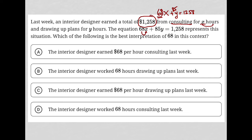Looking at the answer choices: Choice A — the interior designer earned $68 per hour consulting last week. I like that answer. Choice B — the interior designer worked 68 hours. Definitely not. Choice C — the interior designer earned $68 per hour drawing up plans. No, plans are associated with Y, not X. And D — the interior designer worked 68 hours. No, not hours — it's definitely pay. So choice A is the correct answer.